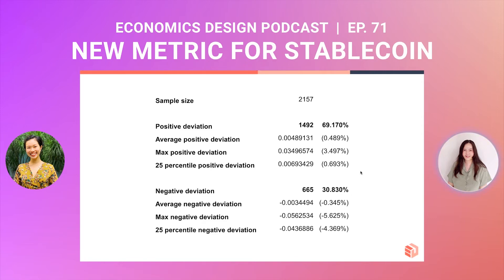We can see that the price of FRAX is constantly going above the peg value, which could be due to the algorithm controlling supply and demand. Upon a closer look, we find that for time frames with a positive deviation, the average positive deviation is actually higher than the average deviation when it is negative. However, the maximum positive deviation is actually much smaller than the maximum negative deviation. This may indicate that the FRAX algorithm allows the price to be pulled back to equilibrium differently depending on direction.